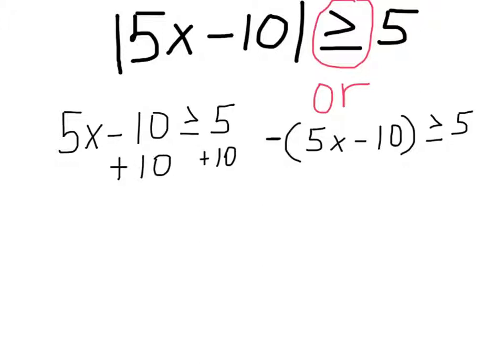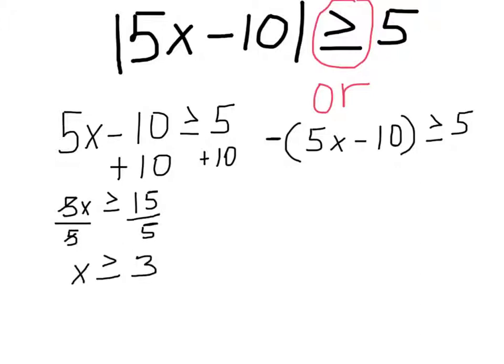For the first inequality, we are going to add a 10 to both sides. That is going to give us 5X is greater than or equal to 15. Divide both sides by five. Fives cancel out. That gives us X is greater than or equal to three.